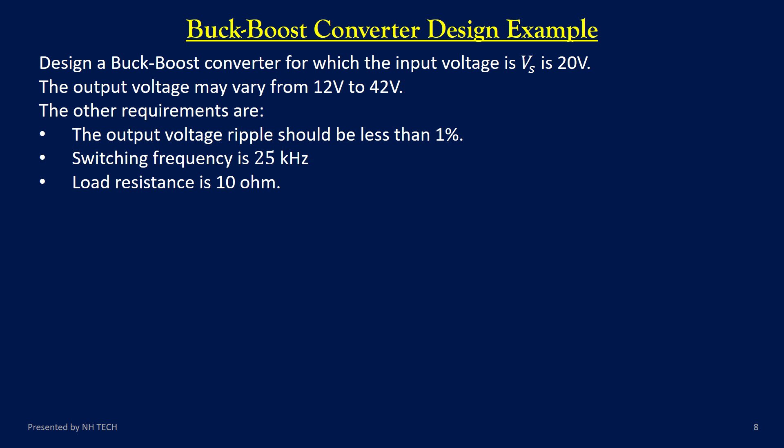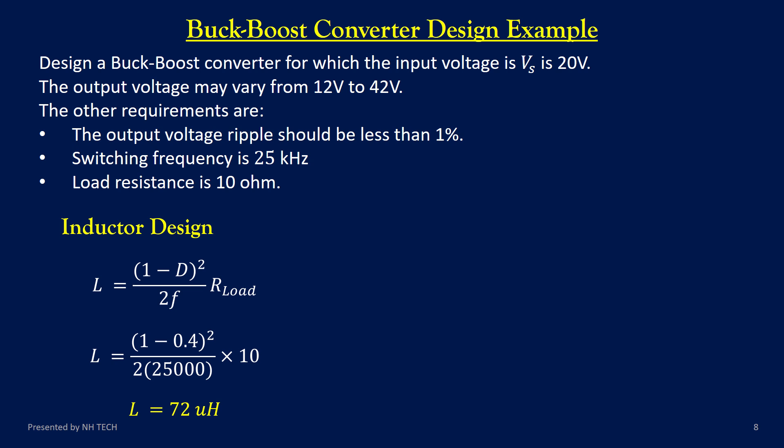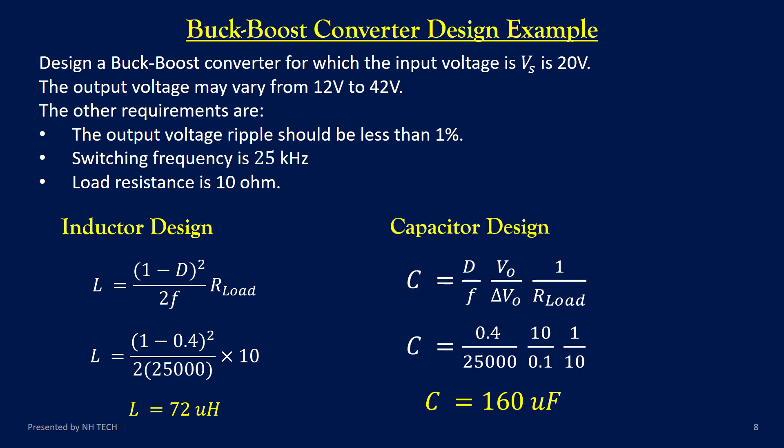Other design requirements are as follows: the output voltage ripple should be less than one percent, the switching frequency is 25 kilohertz, and the load resistance is 10 ohms. Next, we apply the design formulas for the inductor and the capacitor. By substituting the given specifications into these formulas, we can determine suitable values of the inductor and capacitor for our design.